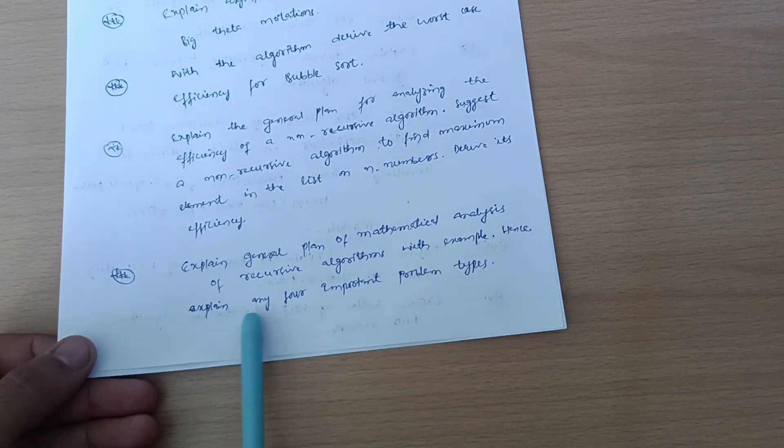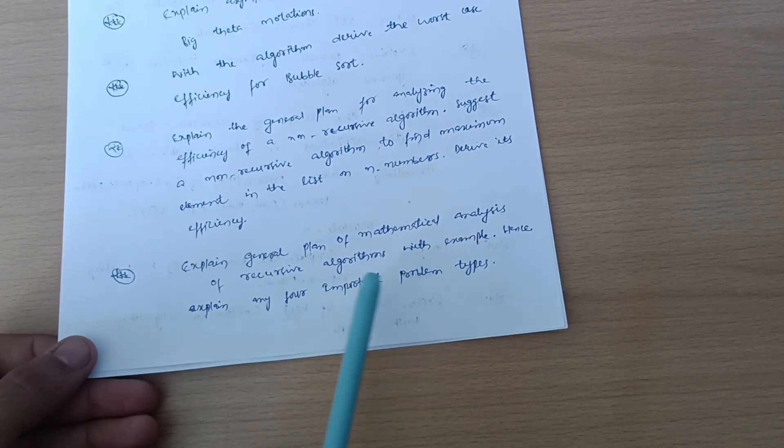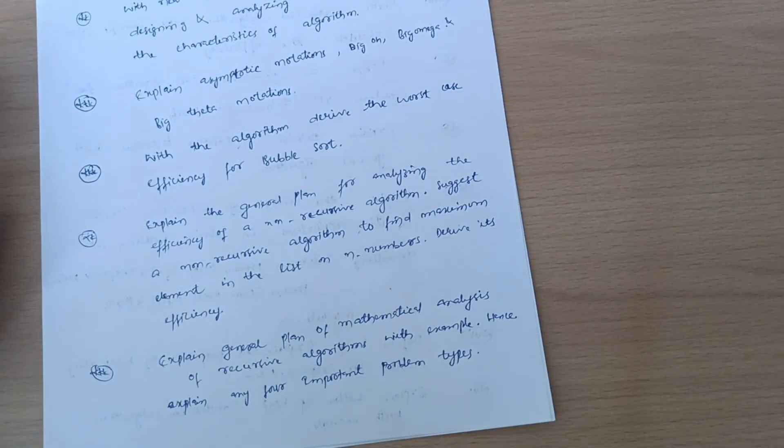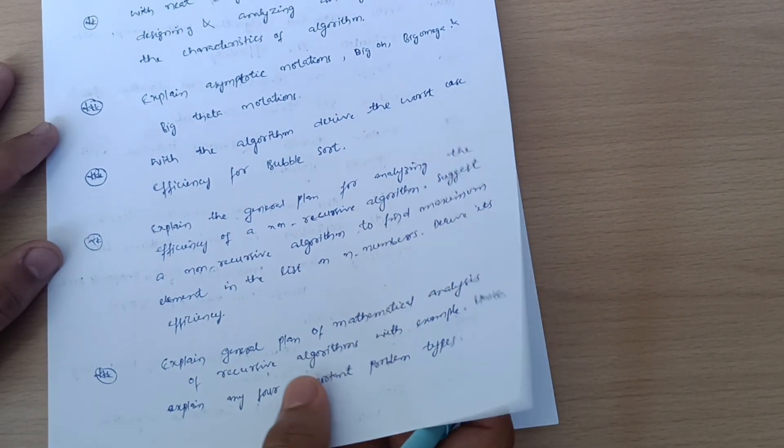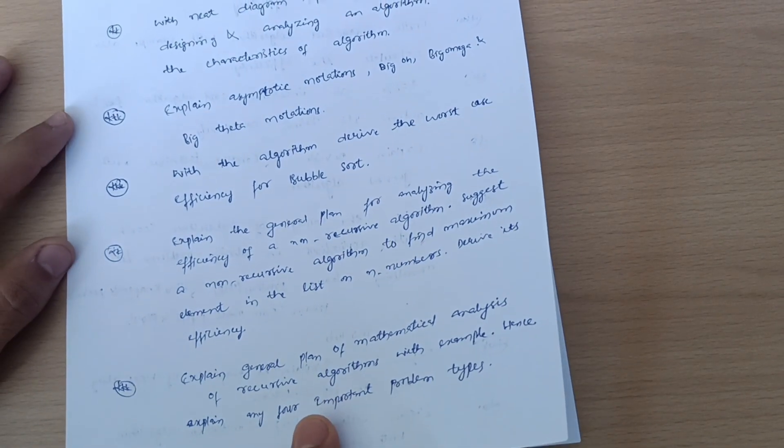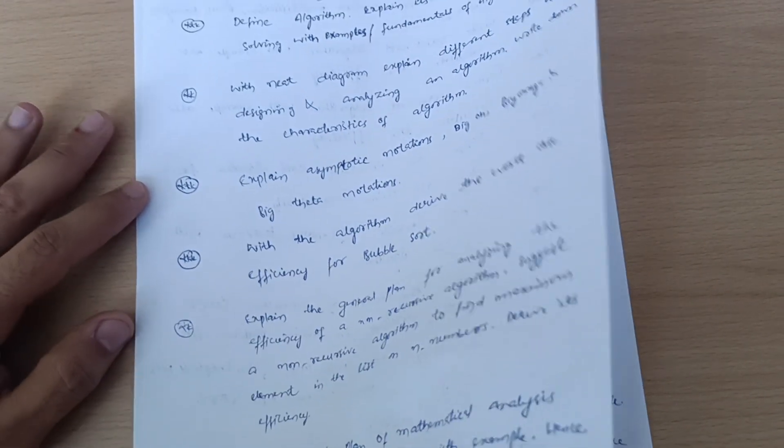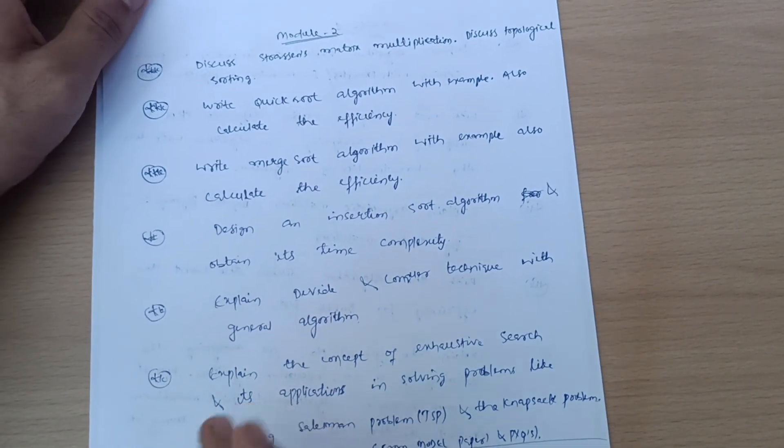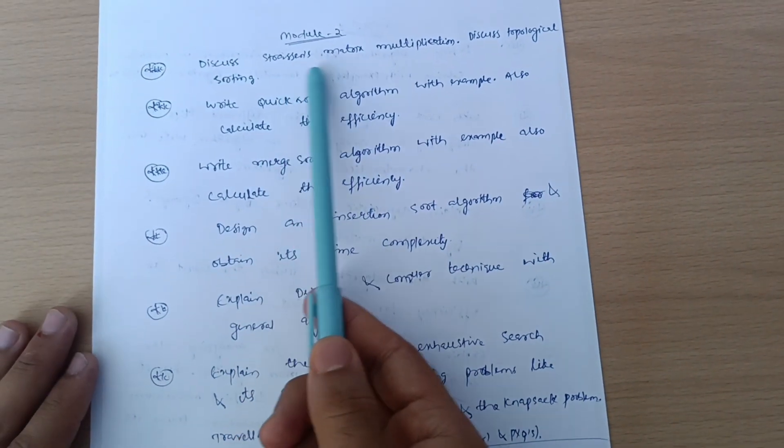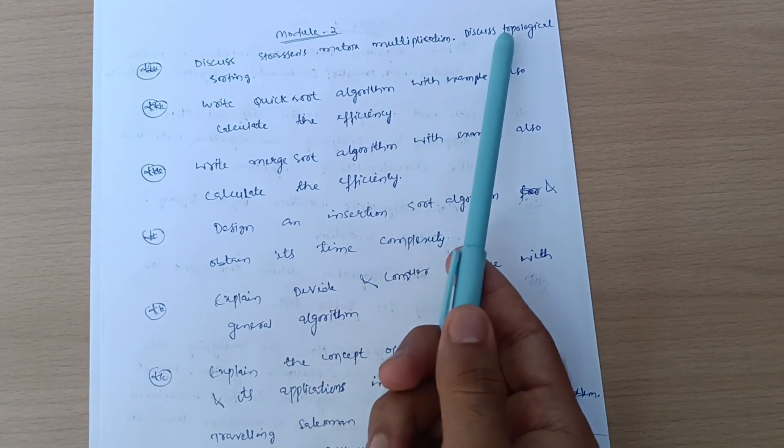Last, explain general plan of mathematical analysis of recursive algorithms with example. Hence explain any four important problem types. These are the theoretical questions which you have to cover from Module 1. Later I will tell you which papers you have to refer for the algorithm part, so stay connected.